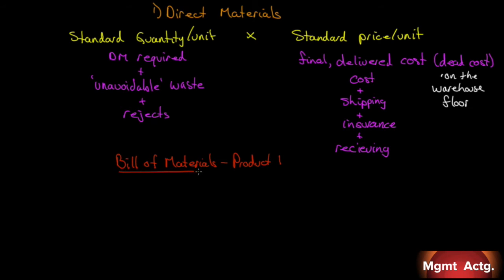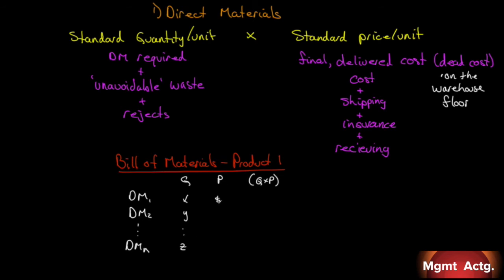Your bill of materials for product one may look something like this, depending on how many inputs there are. You'll have a standard quantity, a standard price, and multiply the two together — direct material 1, direct material 2, all the way down to direct material N, however many are required. The standard quantity of each, the standard price of each — multiply them out and add them together. The total is the standard cost in raw materials for that particular product, and each product will have its own bill of materials.